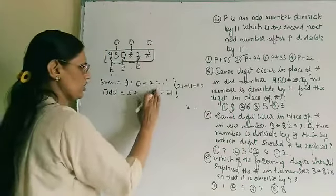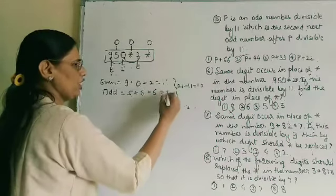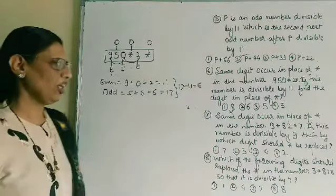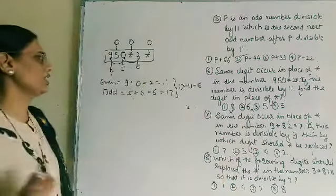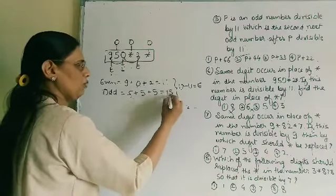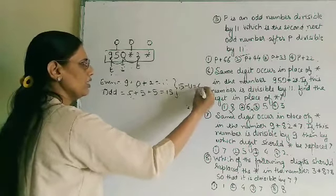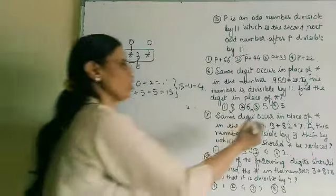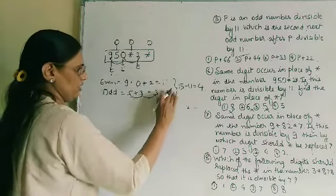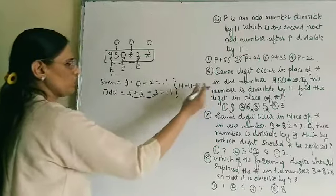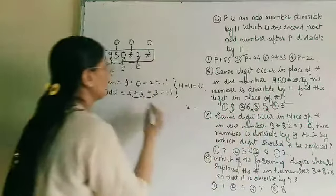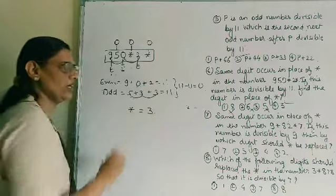Trying star = 6: 5 plus 6 plus 6 = 17. Difference: 17 minus 11 = 6. Not a multiple of 11, so this option is incorrect. Trying star = 5: 5 plus 5 plus 5 = 15. Difference: 15 minus 11 = 4. Not a multiple of 11, incorrect. Trying star = 3: 5 plus 3 plus 3 = 11. Difference: 11 minus 11 = 0, which is a multiple of 11. Therefore star = 3, and the third option is correct.